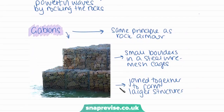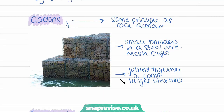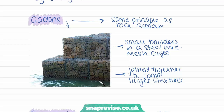Gabions are very similar to rock armour except they are made of smaller boulders trapped in steel cages. These blocks are often joined together to form larger structures, acting as a coastal defence against erosion. Similarly to rock armour, they reduce wave energy and protect the coastline from waves.